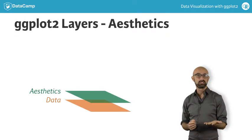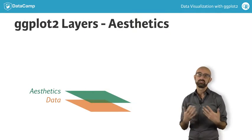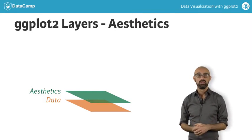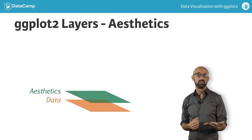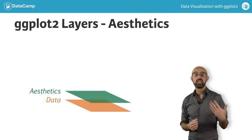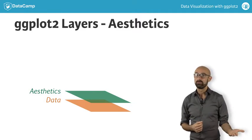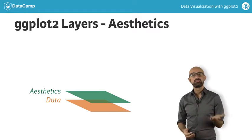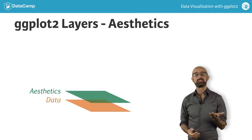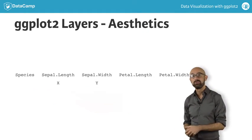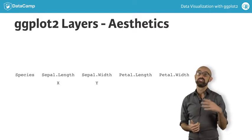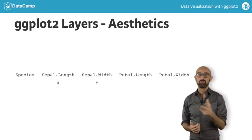The next layer is aesthetics, which tells us which scales we should map our data onto. This is where the second main component of the grammar of graphics comes into play. On top of layering the grammatical elements, it's here that we establish our aesthetic mappings. In this case, we're going to make a scatter plot, so we're going to map the sepal length onto the x aesthetic and the sepal width onto the y aesthetic.